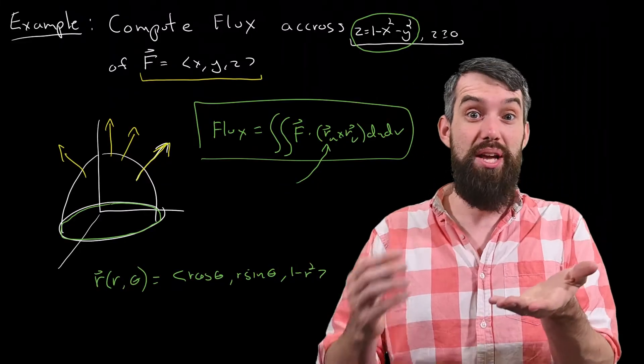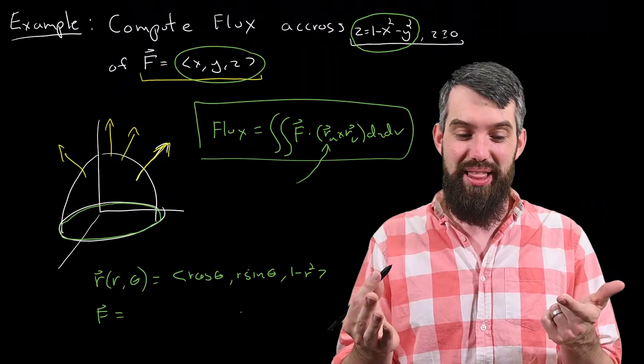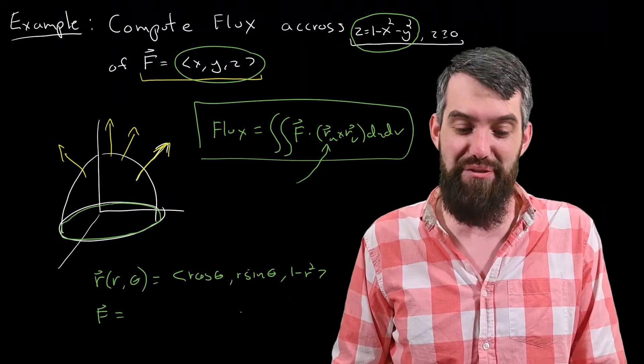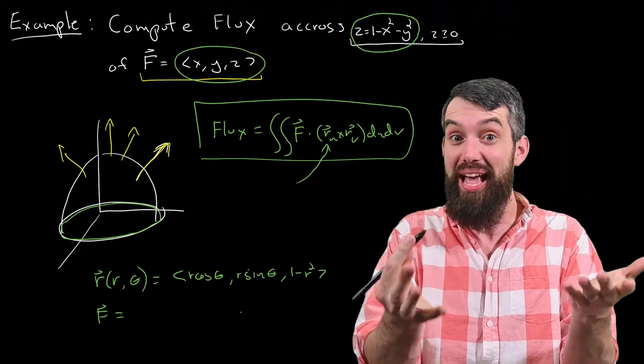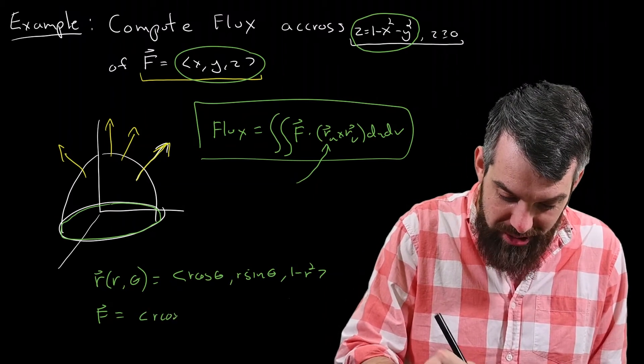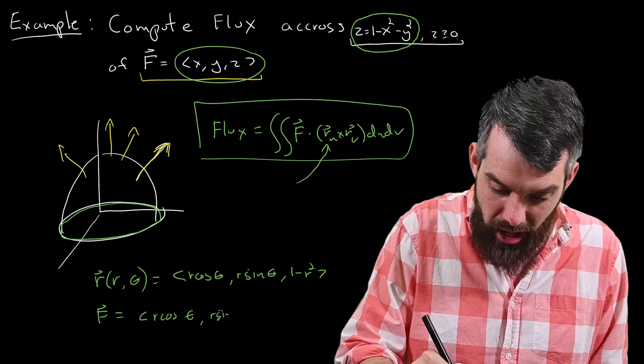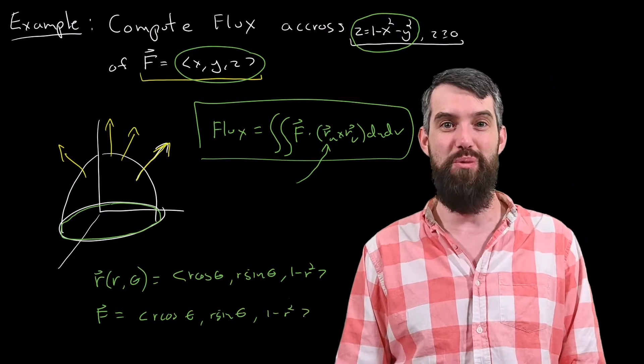So that's the surface. But I also have this field, which was x comma y comma z. Now, it turns out that the choice of field that I have here, F being x, y, z, that just gives you the position. It's the same thing as the r. There really is no difference. So this is just going to be r cosine of theta, r sine of theta, and 1 minus r squared, exactly the same as what we just had.